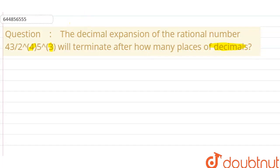First we have to write the expression which is given to us, which is 43 divided by 2 to the power 4 into 5 to the power 3. This is actually our question.